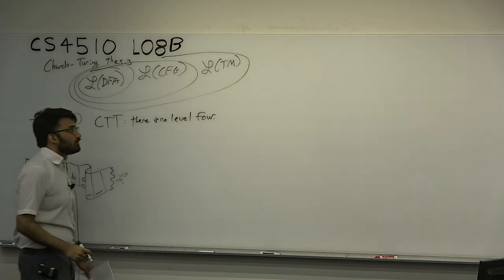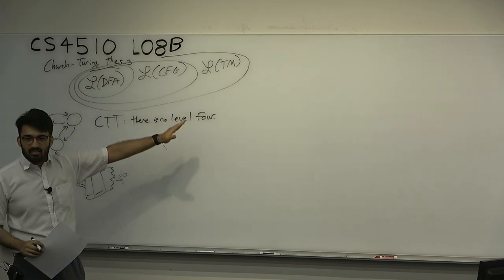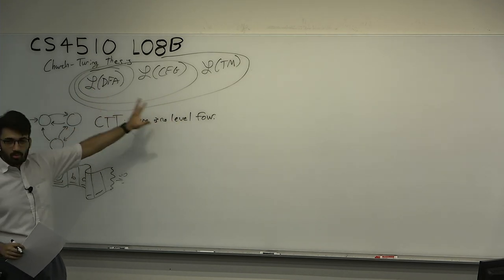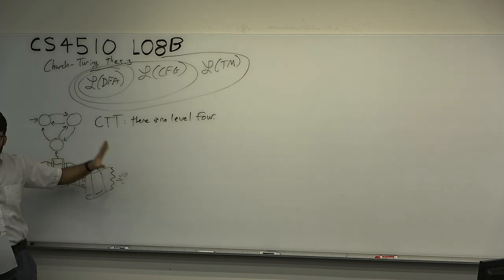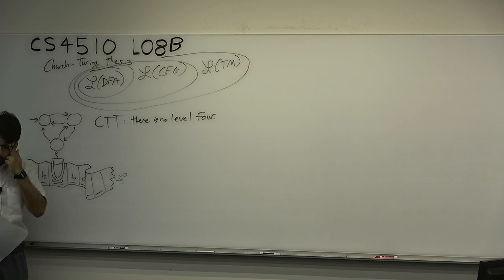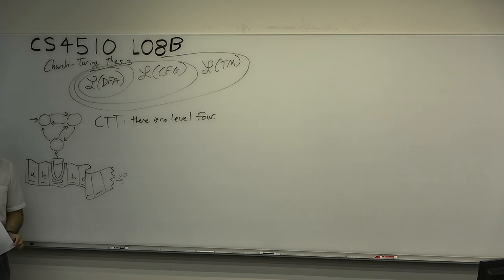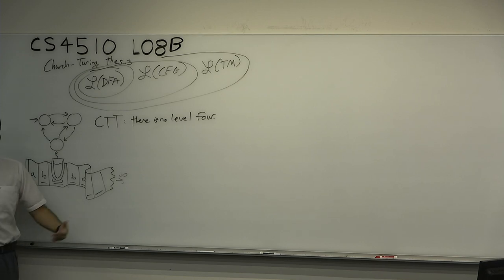We're really stuck on level three. You can make intermediary levels — deterministic, context-sensitive, whatever — but there is nothing more powerful than the Turing machine. The Turing machine is the most powerful computer ever built, yet it is incredibly simple in its construction and design. It only has three instructions: read, write, and move. The Church-Turing thesis says that's it — it's the precipice.